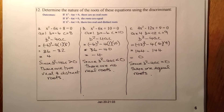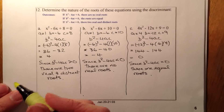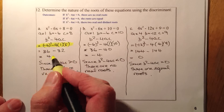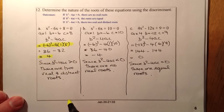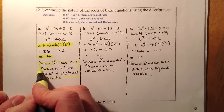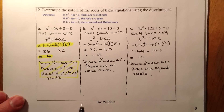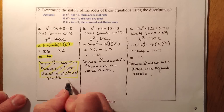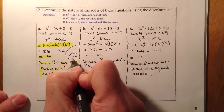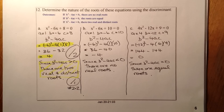For the marking: one mark for correct substitution into b squared minus 4ac, and one mark for evaluating the discriminant — those two marks go towards section 1.3. The mark for the statement about the nature of roots goes towards section 2.2. So that's section 1.3 completed. Remember, there are seven marks available in total, and you need four to achieve a pass. Good luck.